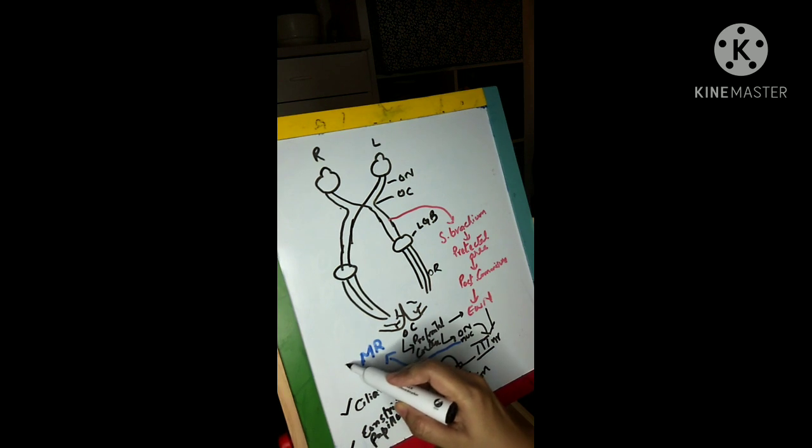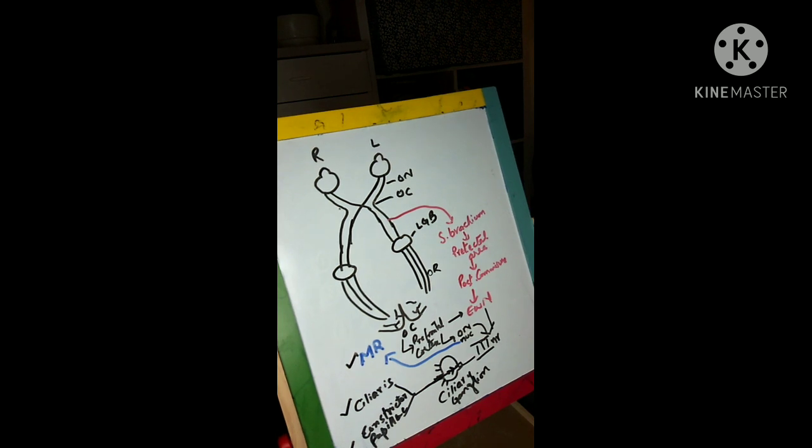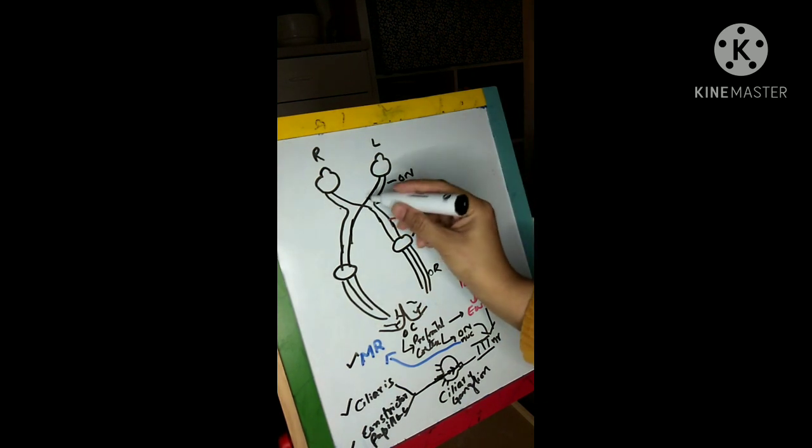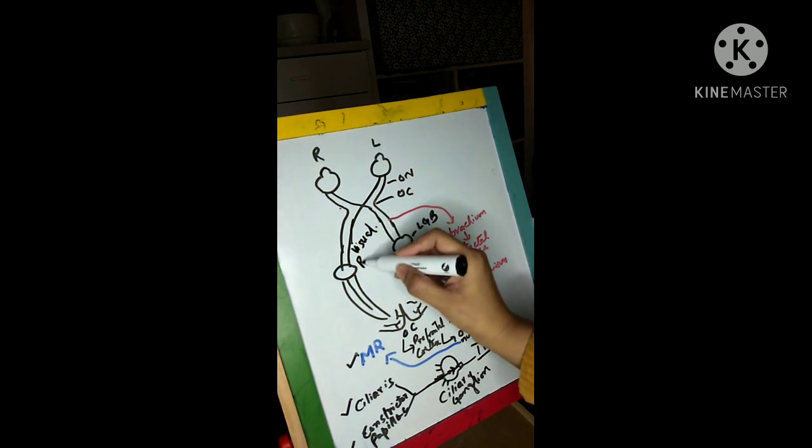So what does it do? Medial rectus will cause the adduction of the eyes. Ciliary muscle will cause the increased convexity of the lens and the constrictor pupillae will cause the pupils to constrict. So when all of these happen we will be able to accommodate and this is basically the accommodation reflex.